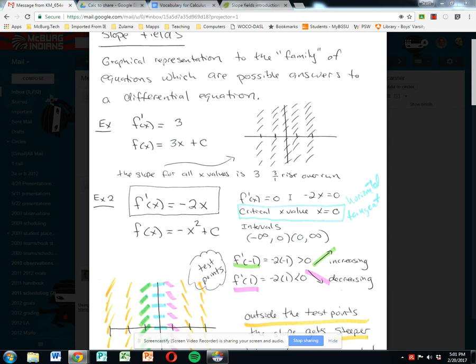So what's a differential equation? It's an equation that's written as a derivative. In this particular case, f'(x) = 3. Let's think about this for a minute. What this means is the derivative is equal to 3 everywhere. What does that mean?